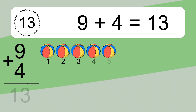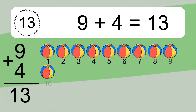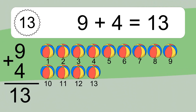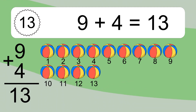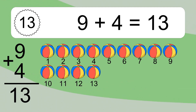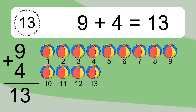9 plus 4 equals what? 9 plus 4 equals 13. Let's count it: 1, 2, 3, 4, 5, 6, 7, 8, 9, 10, 11, 12, 13.